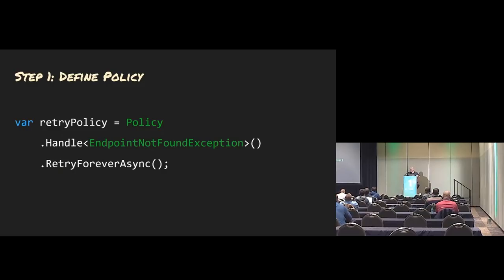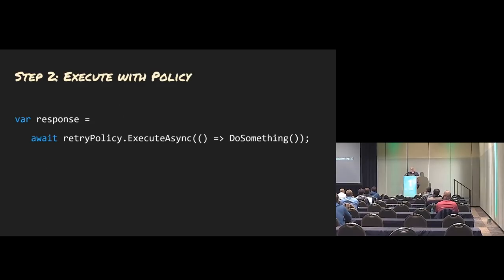This particular one is a retry-forever asynchronous policy, which means there isn't a number of retries to stop at — it's just going to continue. Step two is you execute it, and you have a lambda there that happens. The thing you want to execute goes in that lambda. And then you have handlers for what to do when you're doing a retry — when you've caught an exception, you have a new place to log that or do whatever you want with it.